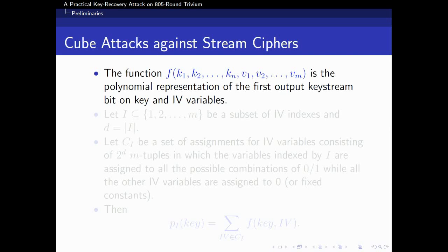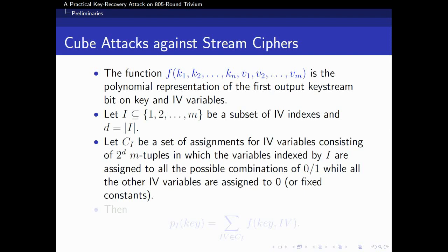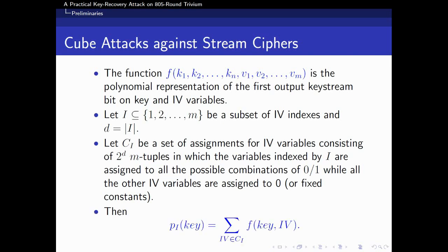For stream ciphers, the function f is the polynomial representation of the first output keystream bit on the key and IV variables. Let I be a subset of IV variable indexes, and d be the order of set I. Let c_I be a set of assignments of IV variables consisting of 2^d n-tuples, in which the variables indexed by I are assigned to all the possible combinations of 0 or 1, while the other IV variables are assigned to 0 or fixed constants. Then, the superpoly of f, which is equal to the summation of functions derived by elements in c_I, is a function on key variables.